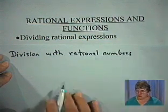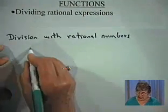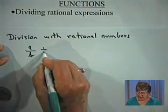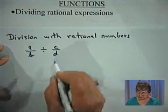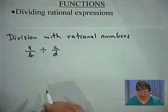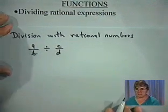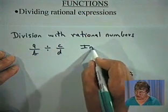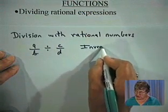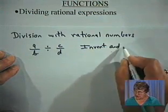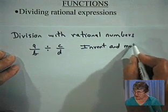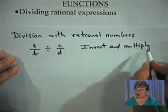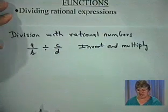Suppose we have A over B, a rational number, and that's divided by C over D. Back when you did this before, you probably learned that what you need to do is to invert and multiply. So after we invert, the problem becomes a multiplication problem, and we're back to the previous section.